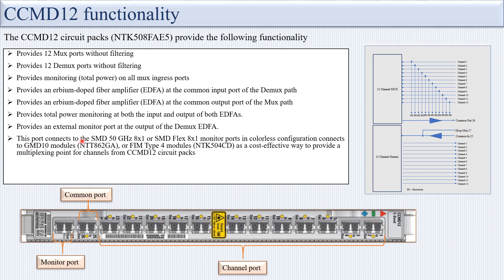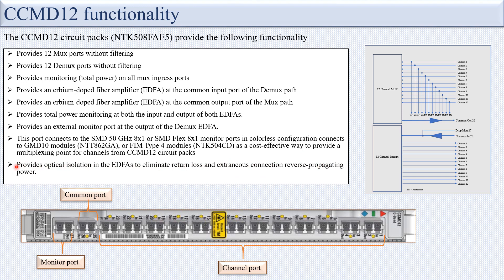Port 27 connects to the SMD 50 GHz 8x1 or SMD Flex 8x1 monitor ports in the colorless configuration, or connects to GMD 2N modules or FEM Type 4 modules as a cost-effective multiplexing point. The CCMD 12 also provides optical isolation in the ADFA to eliminate return loss and reverse-propagating power, preventing back-propagation through the port.